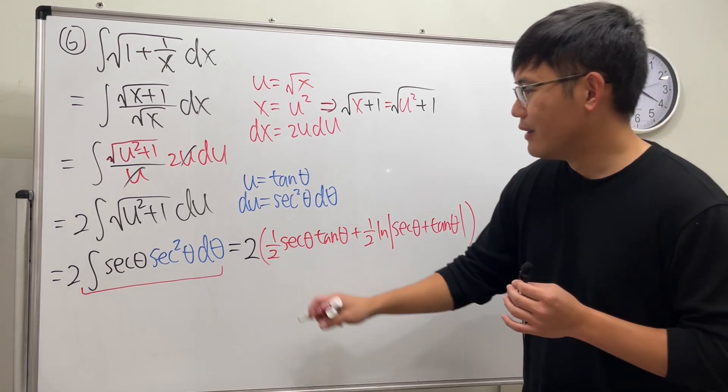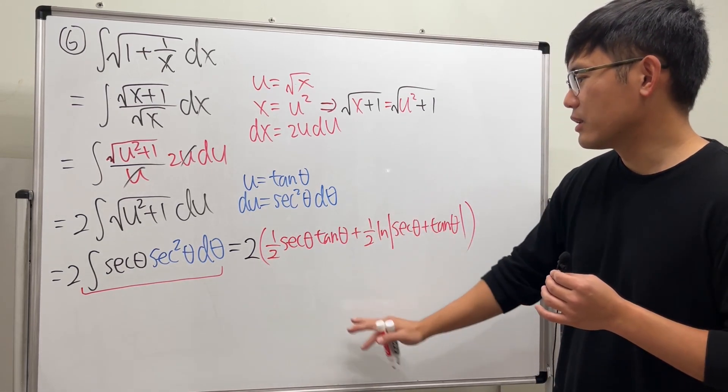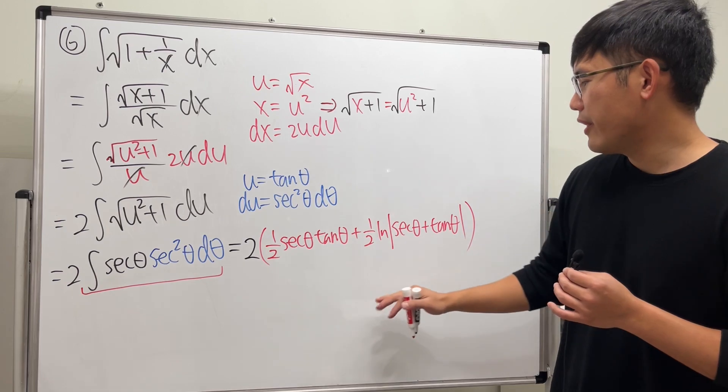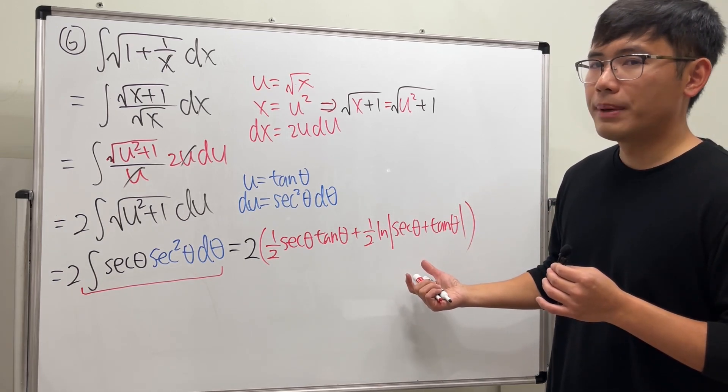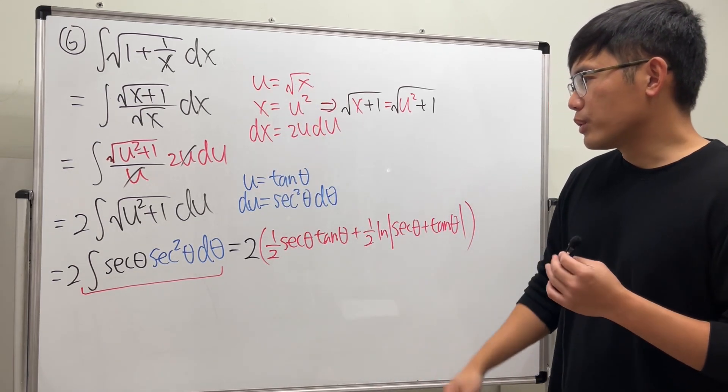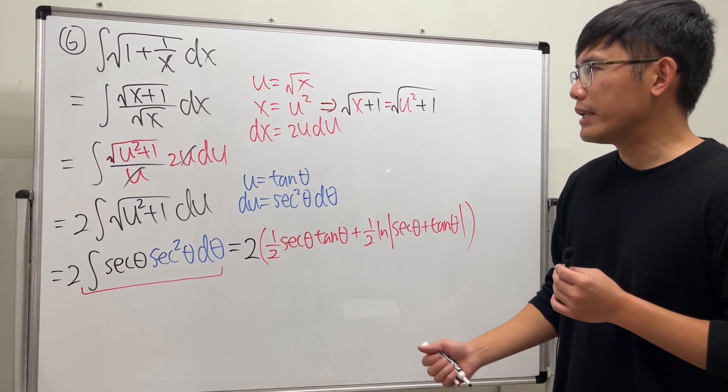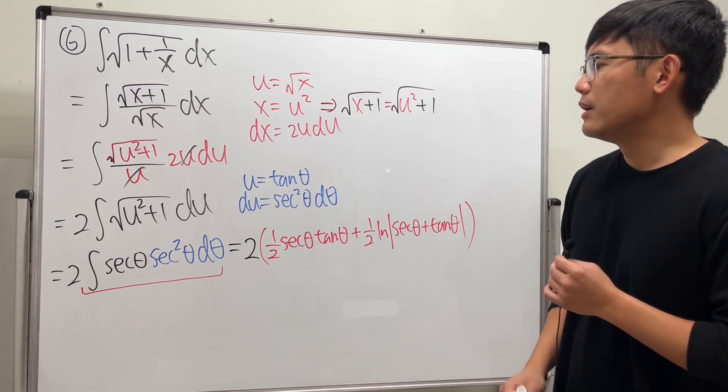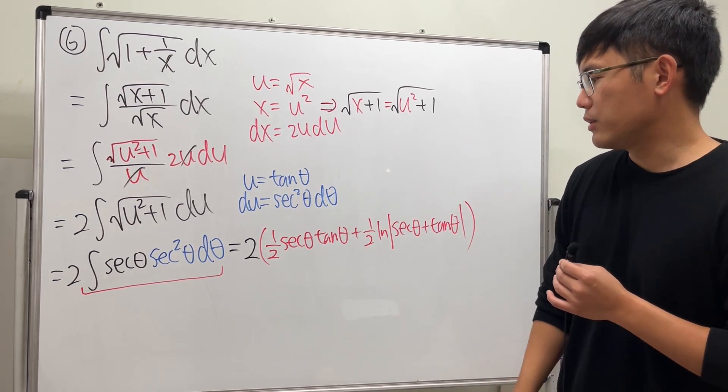Not done yet. First of all, 2 and 1 half cancel. So we have the secant theta, tangent theta, and all that. And we will have to go back to the u world and then go back to the x world. It depends on how you want to do it. You can go back to the x world right away. I will show you guys how to do that.